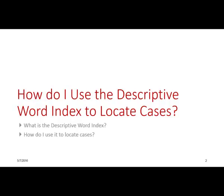If you aren't so fortunate as to have a good topic and key number to start your research with, you'll probably need to turn to the descriptive word index. Each West Digest has a multi-volume descriptive word index located at the end of the set. The descriptive word index is a detailed alphabetical listing of subjects, headings, and important legal terms with a reference to where corresponding information is located within the digest. If you're working on a research assignment and you've done your preliminary analysis, you should have a list of searchable terms.